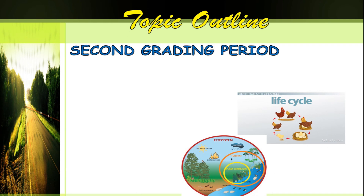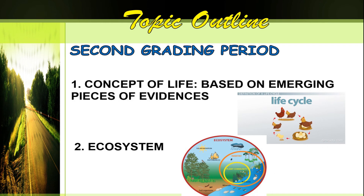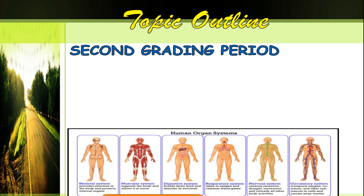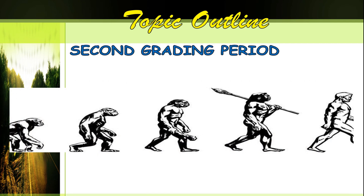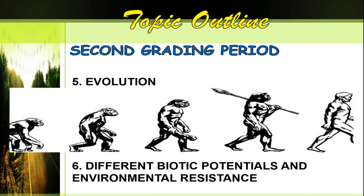For the second grading period, we are now dealing with life science, wherein we are going to introduce the concept of life based on emerging pieces of evidence, followed by a discussion of ecosystems and how the abiotic and biotic factors interact with one another. The next topic will be the different types of reproduction — sexual and asexual reproduction — followed by the different organ and body systems and how these systems interact with one another. We are also going to discuss evolution and the different biotic potentials and environmental resistance.